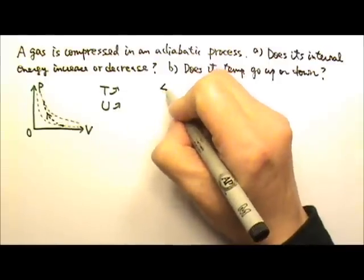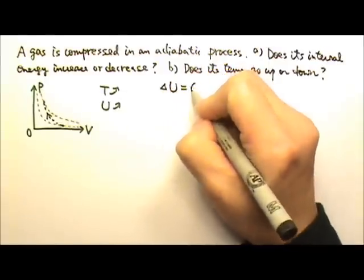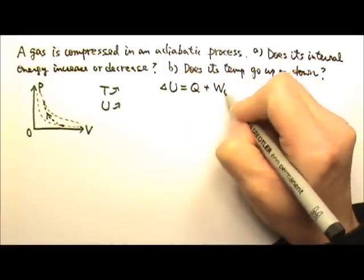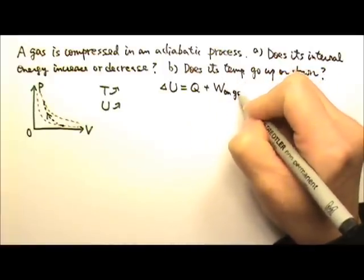Or we can use the first law. Delta U equals Q plus W, where Q is the heat added to the gas and W is the work done on the gas.